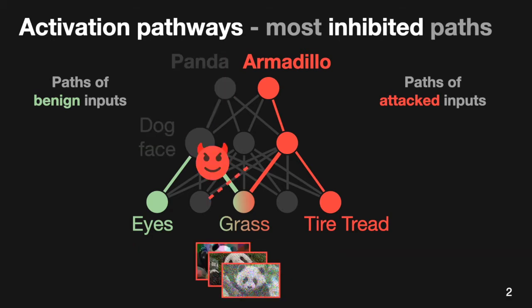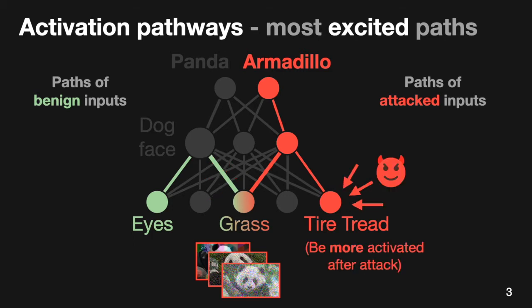To understand how attacks manipulate neurons and paths inside models, BLUF visualizes activation pathways of both benign inputs and attacked inputs. BLUF also visualizes the most inhibited paths by the attack to uncover where the attack is blocking signals to the benign path, and the most excited paths by the attack to uncover where attacks stimulate activation pathways going towards wrong directions.